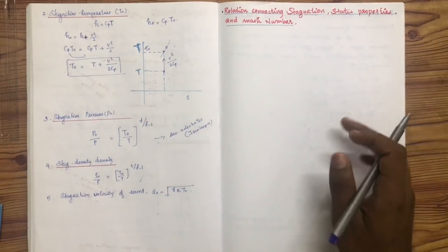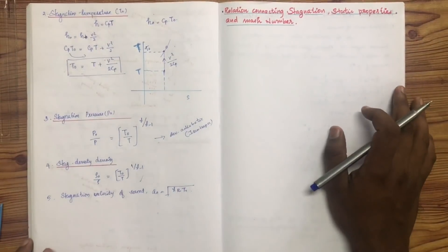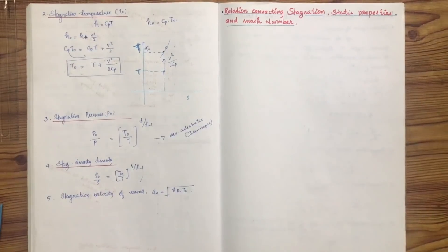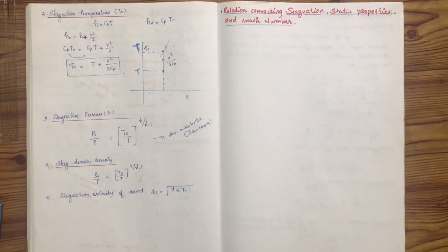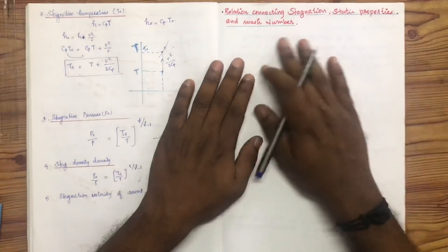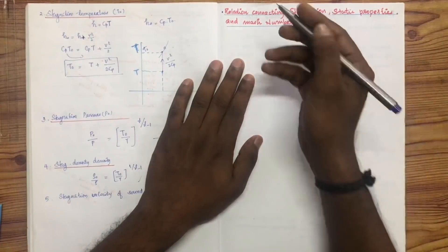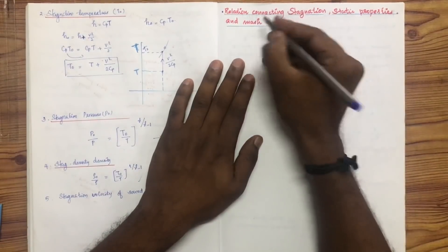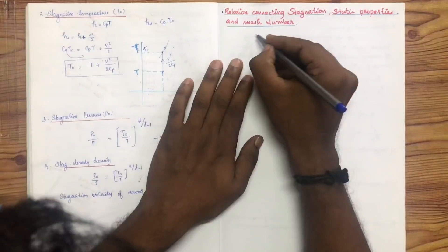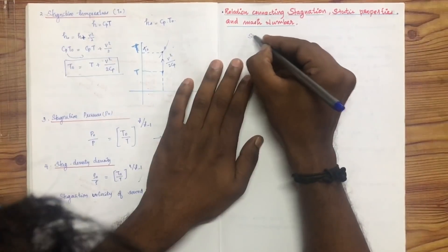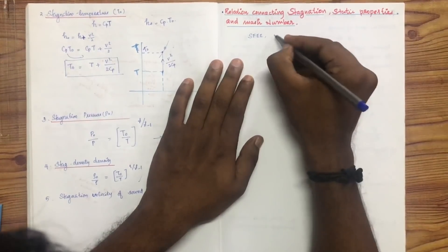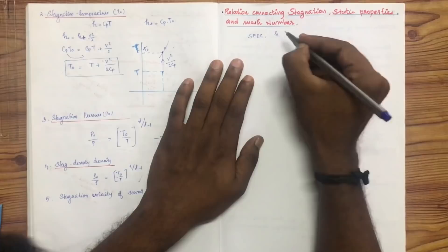This is the first module on stagnation, static properties, and Mach number. We will consider the steady flow energy equation in this video.